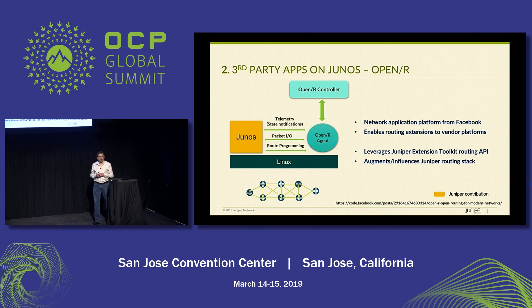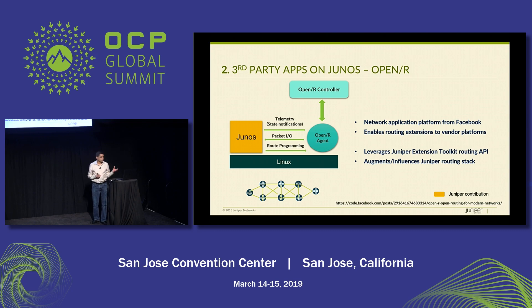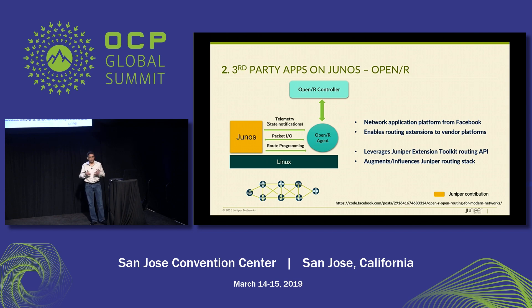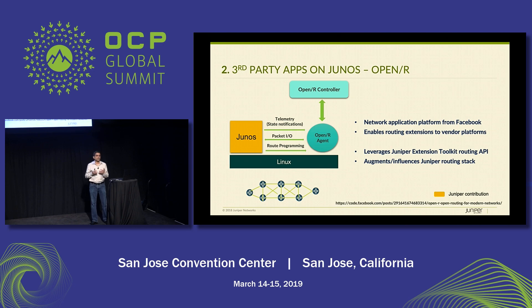This is a use case where we're running third-party applications on Junos. A specific use case highlighted is OpenR — the network application platform from Facebook, which enables routing extensions to vendor platforms. What we've been able to do is onboard OpenR on a Juniper platform and take advantage of the Junos Extension Toolkit, which is a bunch of APIs into our routing stack. This allows the OpenR agent to actually augment and influence the Juniper routing stack. This is in production — something that we are already shipping.